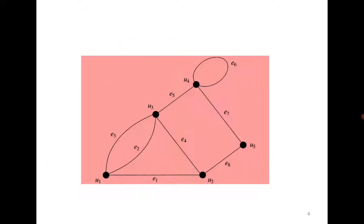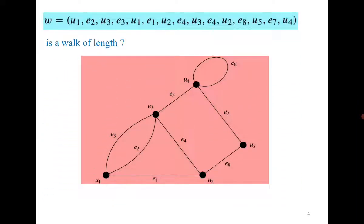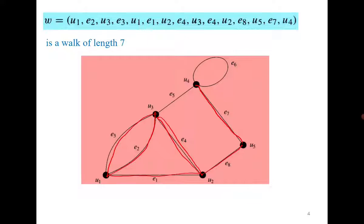In this example, we can start from u1 going to e2, then e3, then e1, e4, then again coming back to e4, then e8 and then e7. Seven edges are involved and therefore it is a walk of length seven. The important observation here is that in a walk, edges as well as vertices can be repeated.